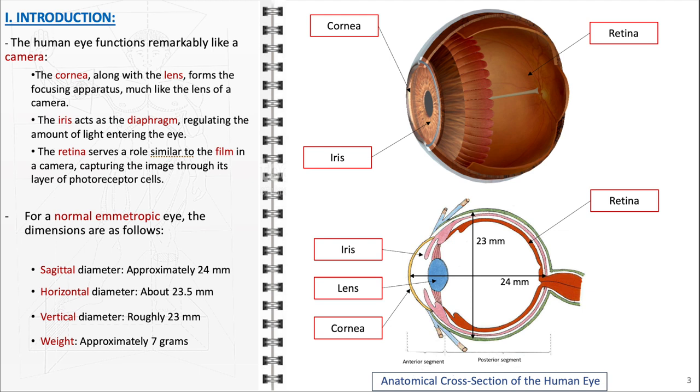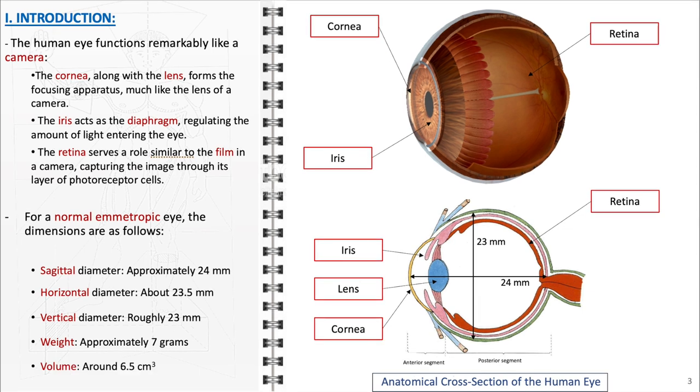The eye's weight is approximately 7 grams, highlighting its lightness. The volume of the eye is around 6.5 cubic centimeters, demonstrating the compact and efficient nature of its design. These measurements reflect the eye's delicate balance between size and functionality, underlining its complexity and precision as an organ.